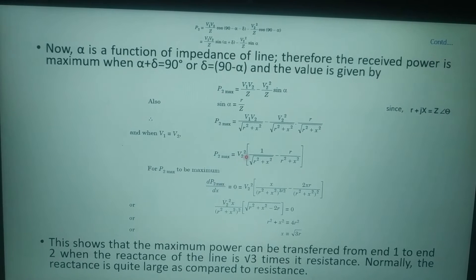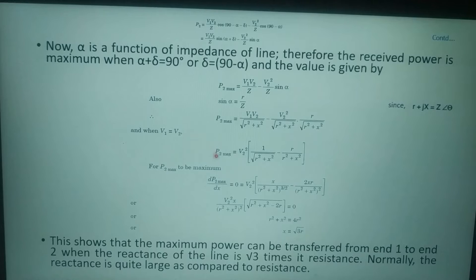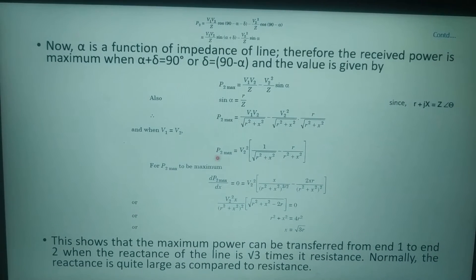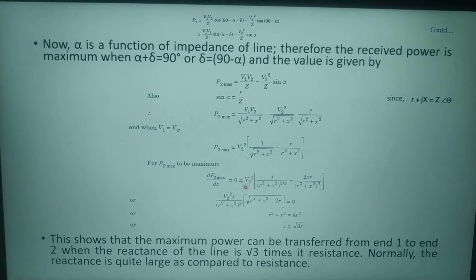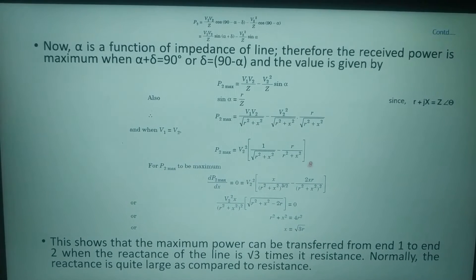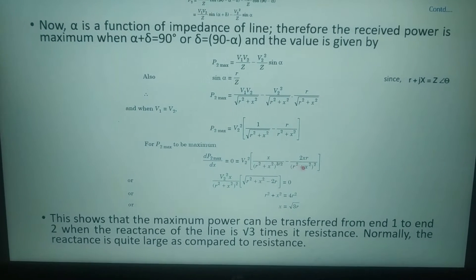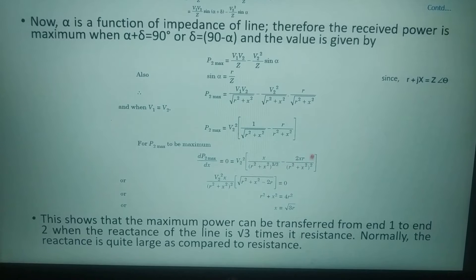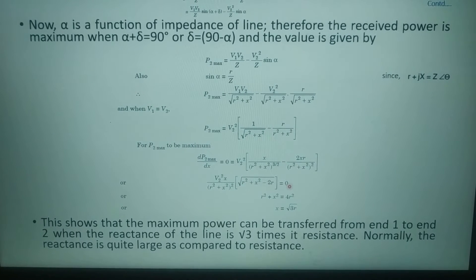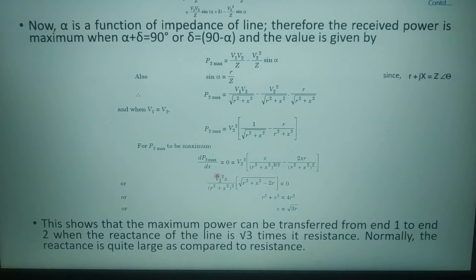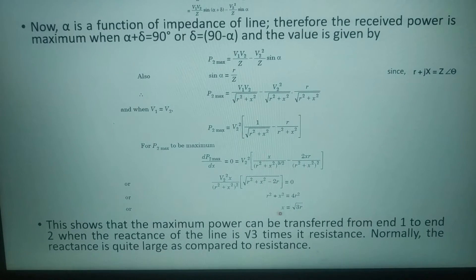For P2_max to be maximum, we differentiate this equation with respect to X and set it equal to 0. Setting dP2_max/dX equal to 0, we get V2 squared times the differentiation giving X upon (R² + X²)^(3/2) minus 2XR upon (R² + X²)² equal to 0. Simplifying, we get V2 squared upon X upon (R² + X²)² times sqrt(R² + X²) minus 2R equals 0. Since the other term cannot be zero, we get R² + X² equals 4R².